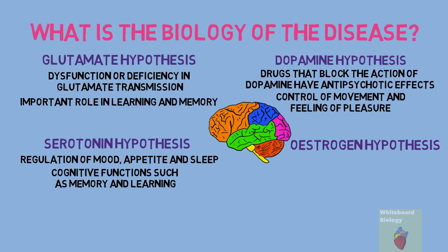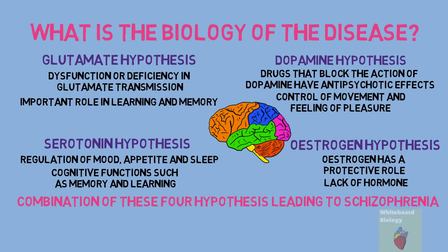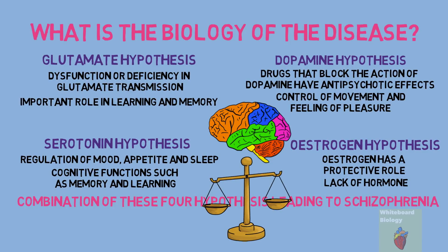Lastly is the estrogen hypothesis, which suggests that estrogen has a protective role and so a lack of this hormone can cause the mental disorder. It may be a combination of these four hypotheses leading to schizophrenia, and the treatment typically relies on trying to restore the balance of chemicals in the brain. If you have enjoyed this video, please subscribe to the channel and check out the other videos.